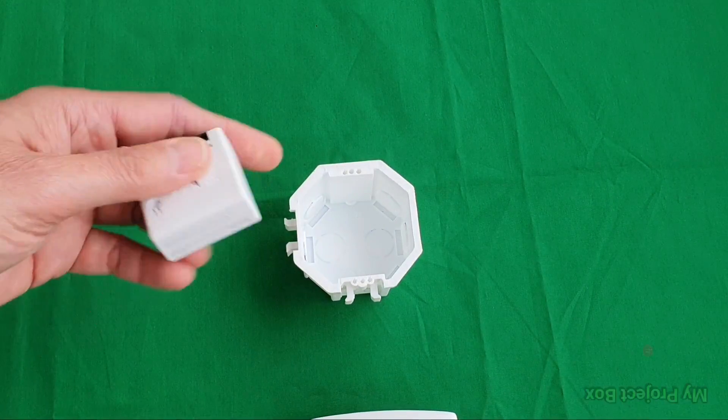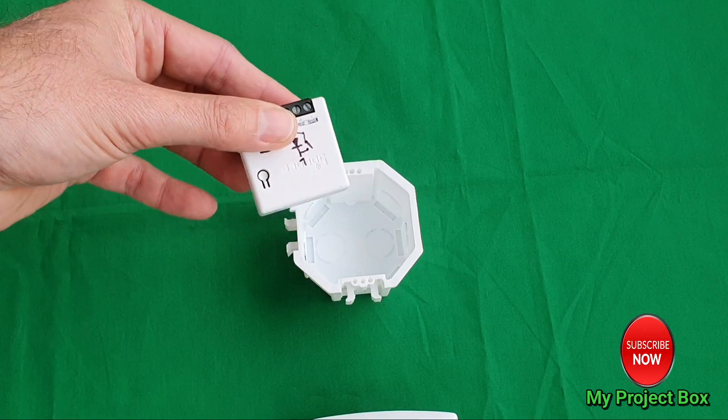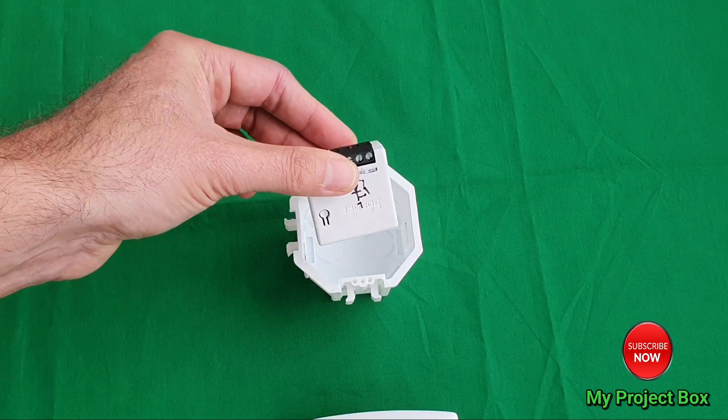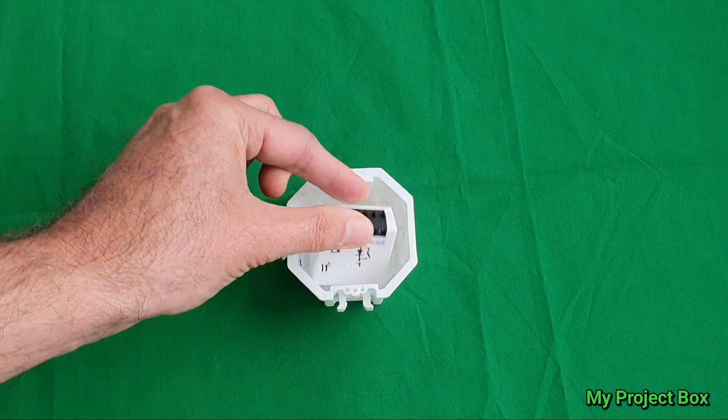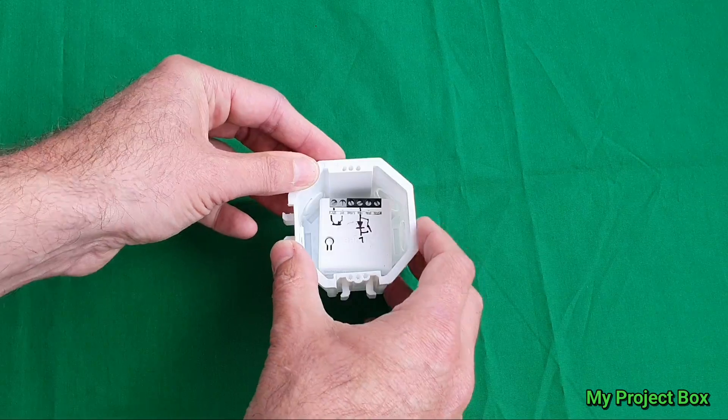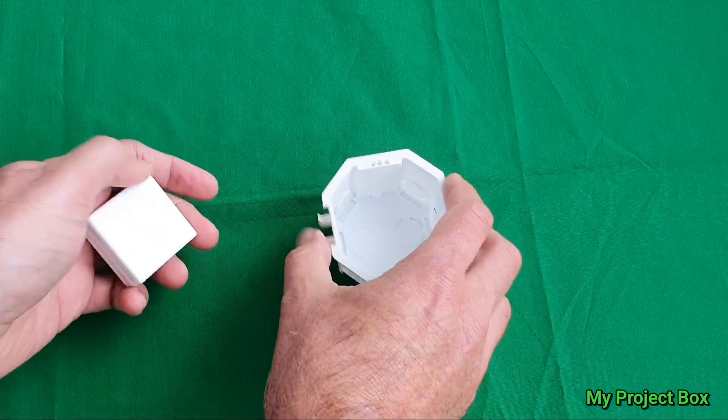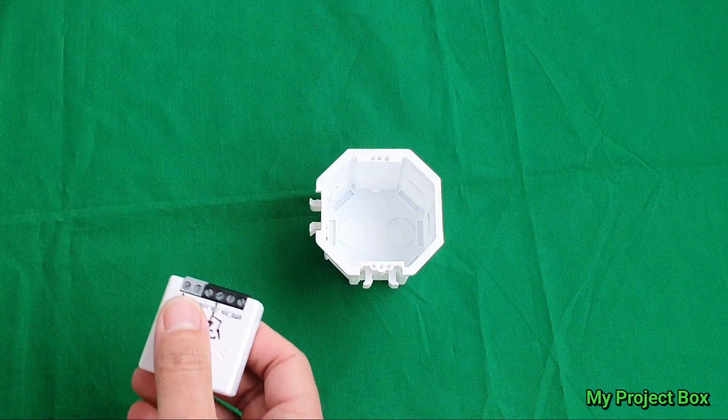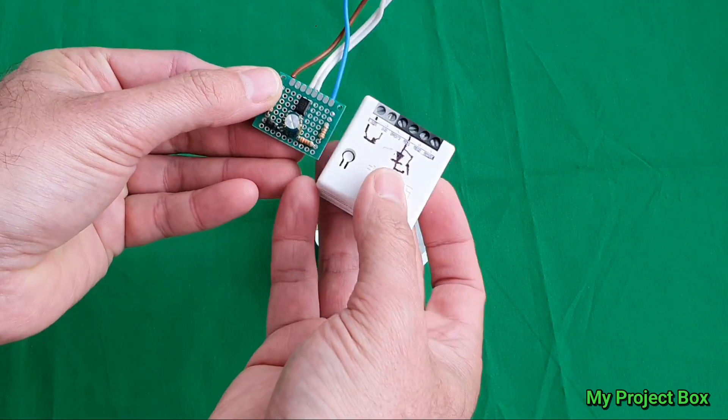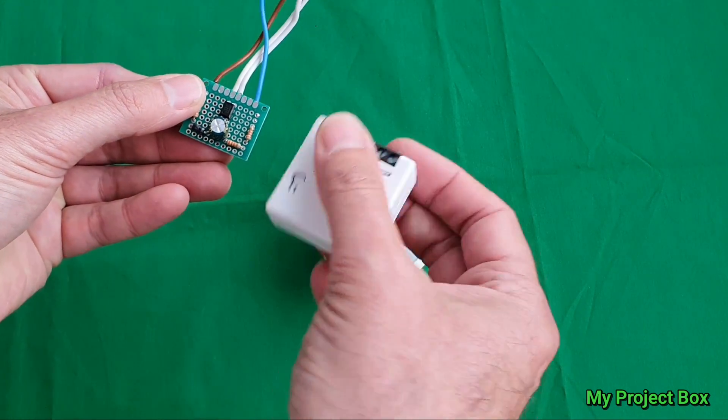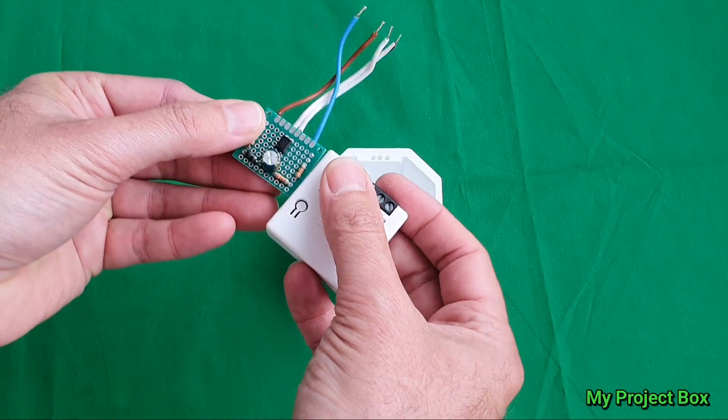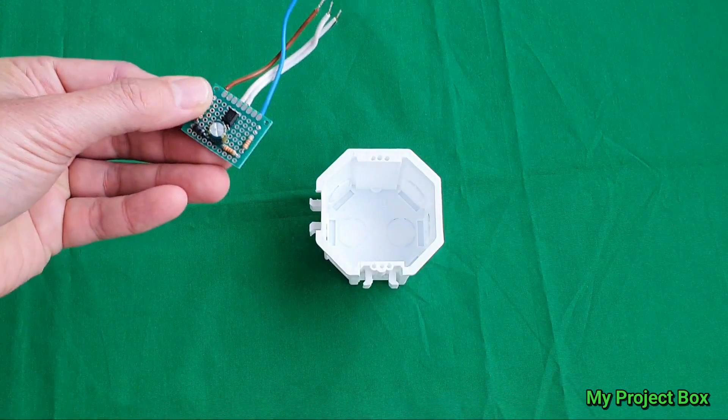In a previous video we looked at putting a Sonoff Mini inside the back box for a light switch and how that was problematic because I had no neutral there. I came up with a circuit solution that allows you to put the Sonoff up by the light fixture itself and still retain light switch control.